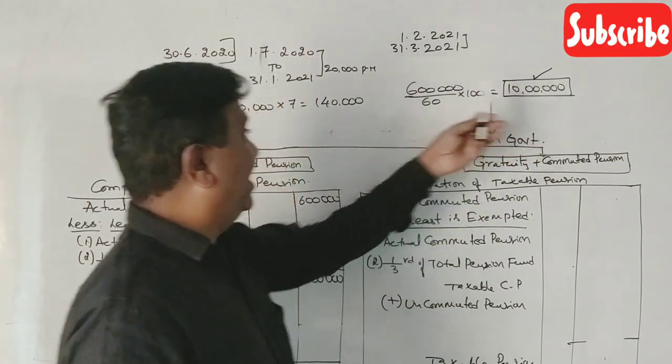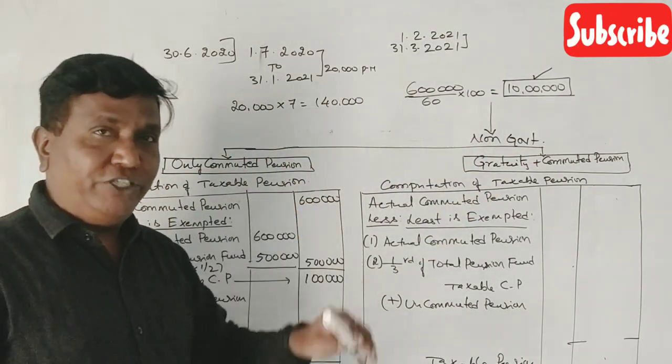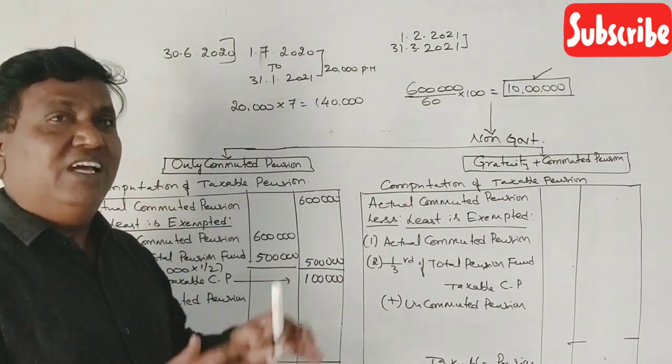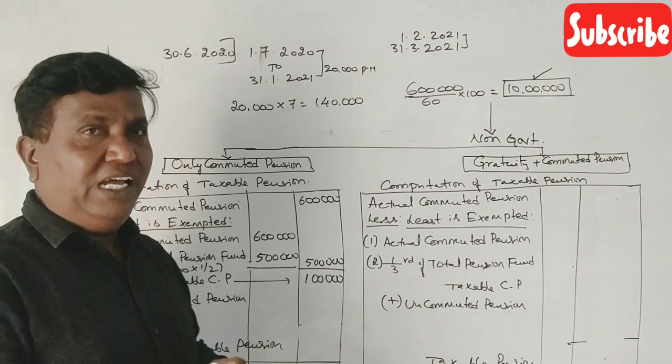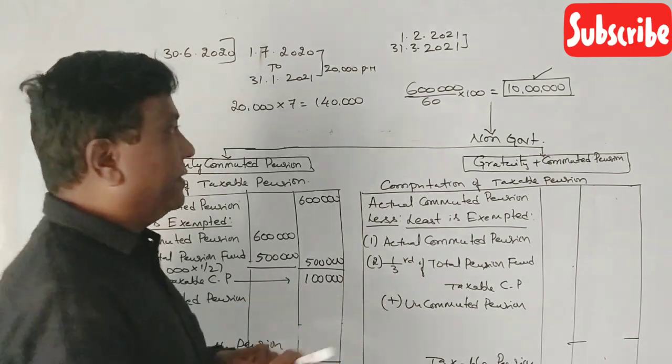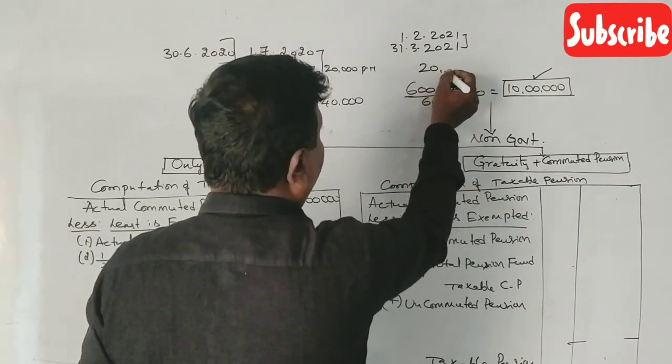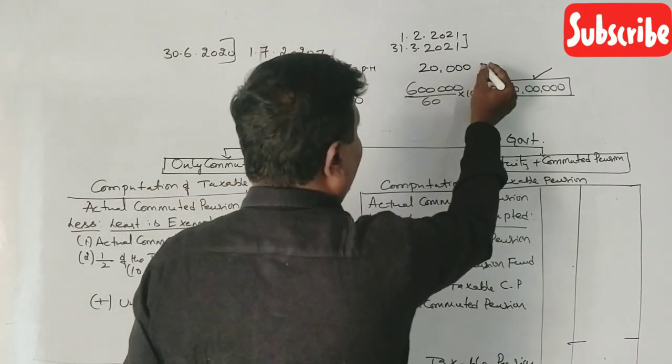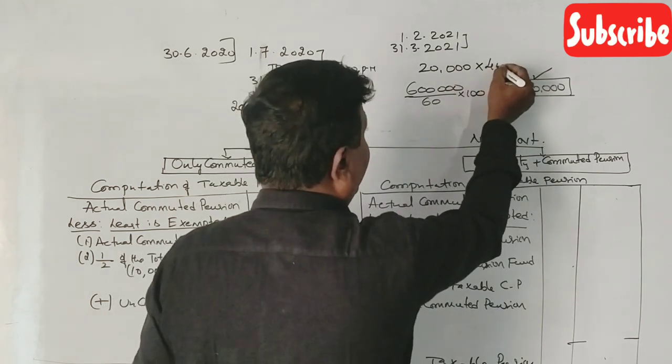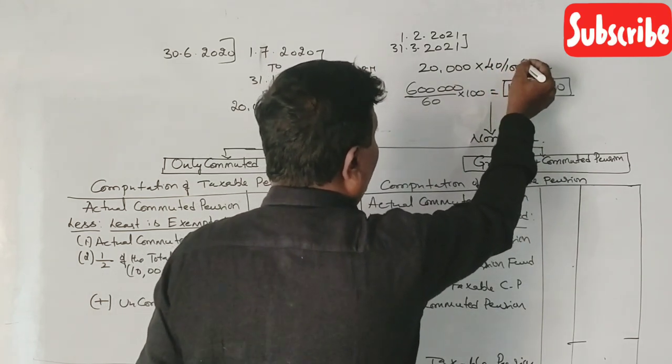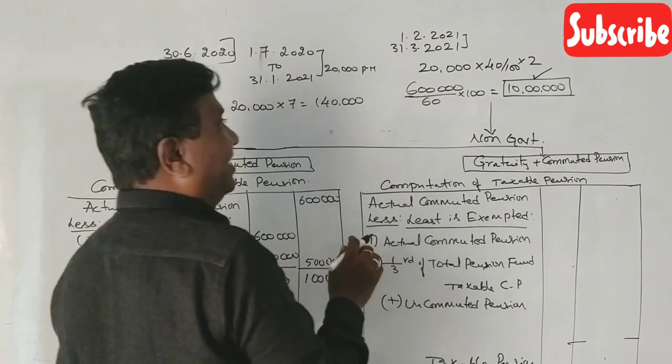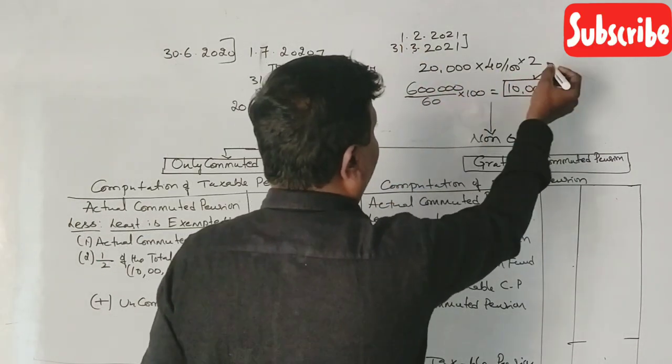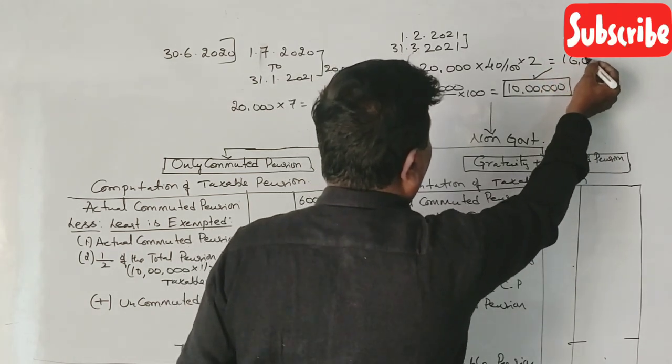If you pay 60% commuted, then 40% uncommuted is left. So 40% of 20,000 is 8,000. February and March - 8,000 into 2 months equals 16,000. That's right.